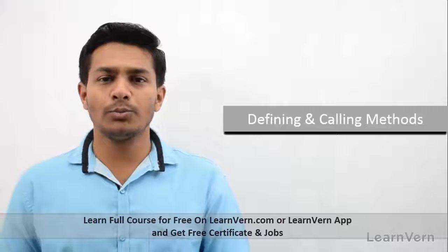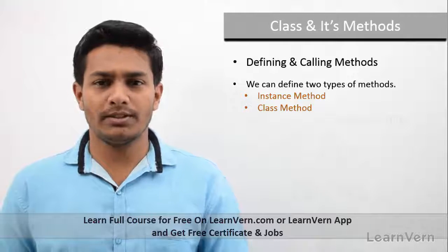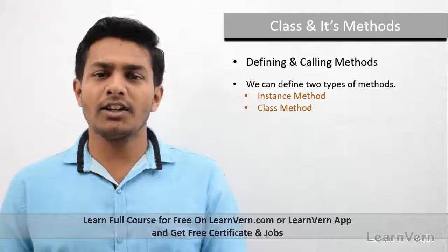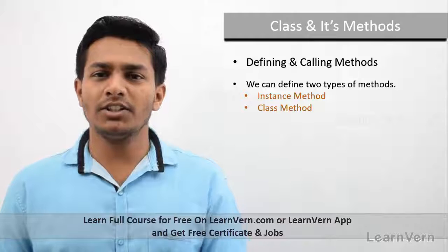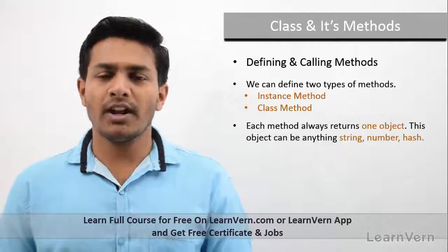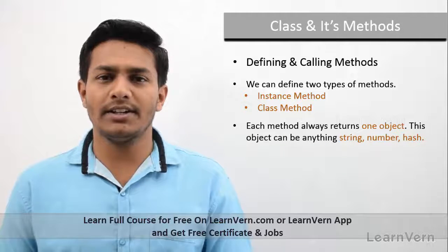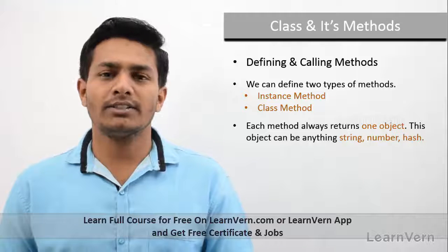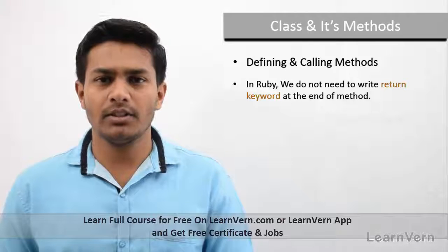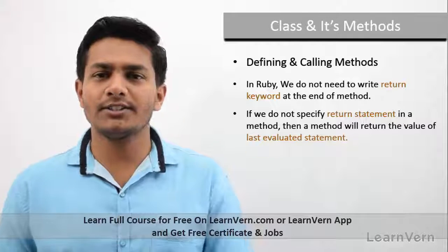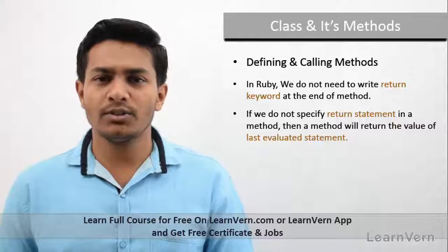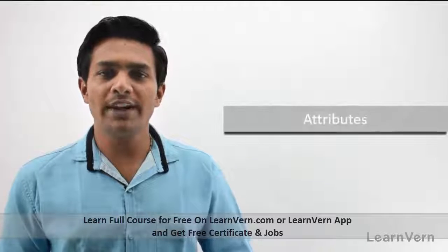In our class we mainly have two types of methods: instance methods and class methods. There is also the initializer method, which is a constructor-type method we covered in the previous tutorial. In Ruby, any method returns an object — it can be a string, number, hash, etc. We do not need to explicitly write the 'return' keyword; Ruby will return the value of the last executed statement.